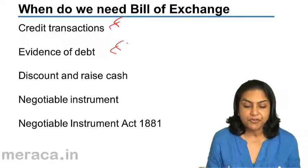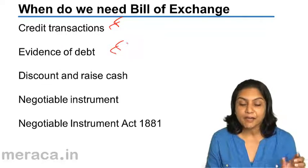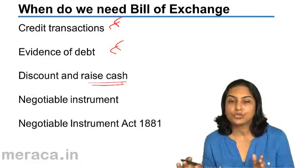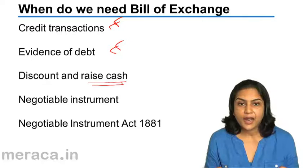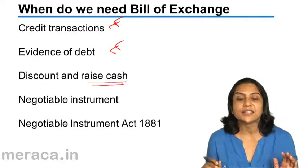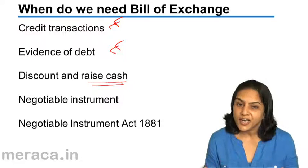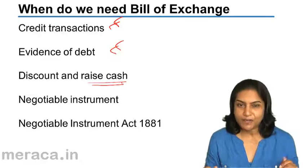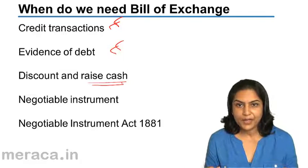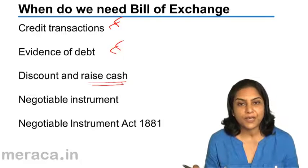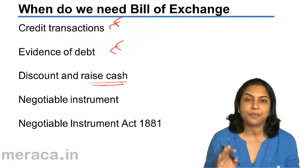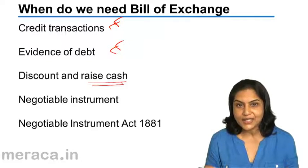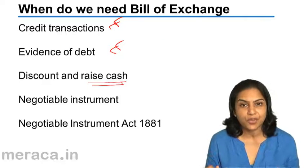Another great benefit of a bill of exchange is that it can be used to raise cash. Once X has sold goods to Y on the 1st of January, and Y wants goods on credit but X needs cash, the bill of exchange is again an instrument to keep both happy. A bill is drawn by X and accepted by Y. Y is happy because for three months he does not have to pay the money, and he is sure that by the end of three months he will be able to pay. X now has a document — a piece of paper — which says he will get this money from Y after three months.